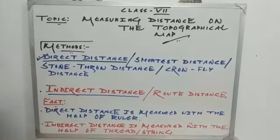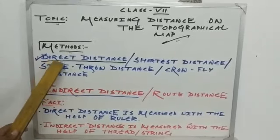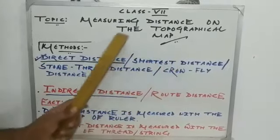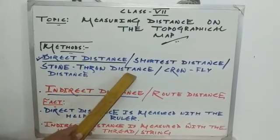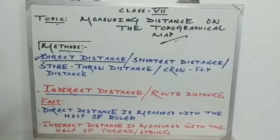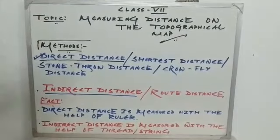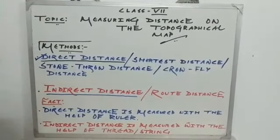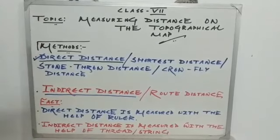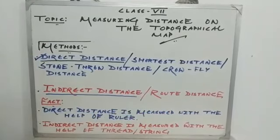There are basically two methods used to measure distance on a topographical map. The first method is the direct distance method, which is also known as the shortest distance method, also called the stone throw distance or crow fly distance. Remember, all four names are the same — only the names are different but the methods of measurement will be different.